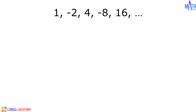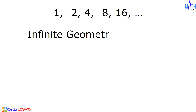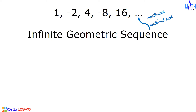Another example of geometric sequence is 1, negative 2, 4, negative 8, 16, and so on. This is an infinite geometric sequence, and the ellipsis means the pattern continues without end. Let us determine the common ratio and the next three terms of this sequence.